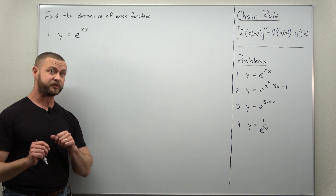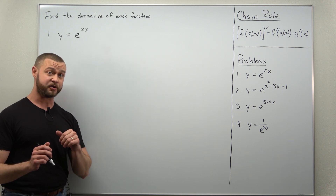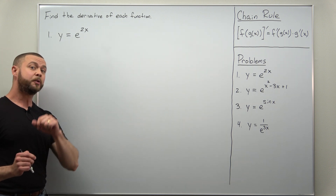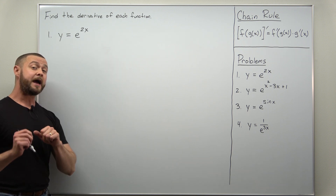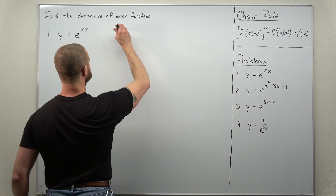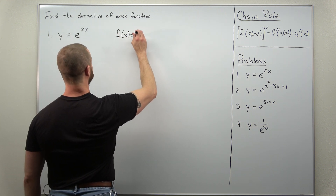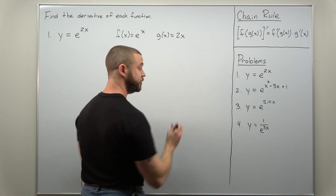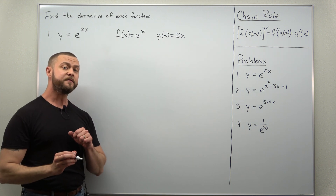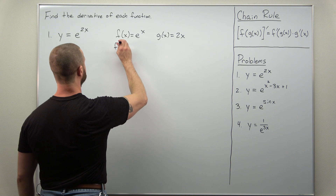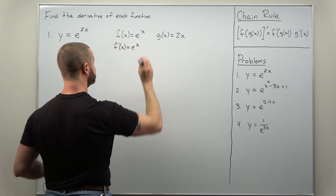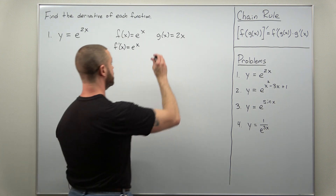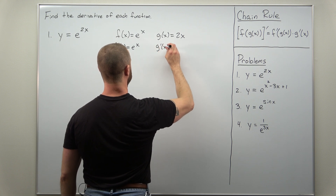Our first step in applying the chain rule is to identify the outer and inner functions. Here we have 2x inside of the exponential function, so we'll take our inner function g of x to be 2x, and the outer function f of x will be e to the x. We calculate the individual derivatives: f prime comes out to e to the x, and the derivative of 2x, that's just 2, so g prime comes out to 2.